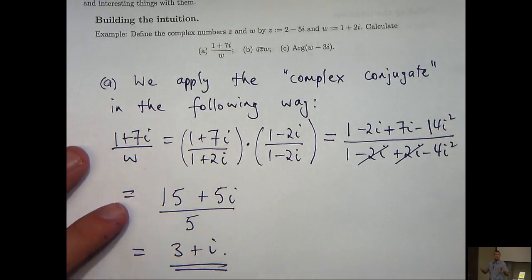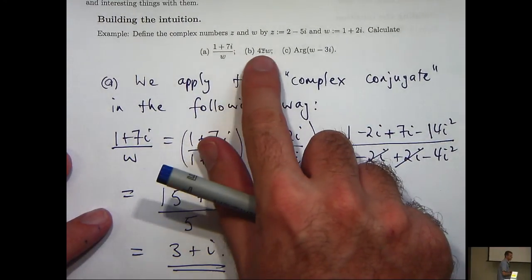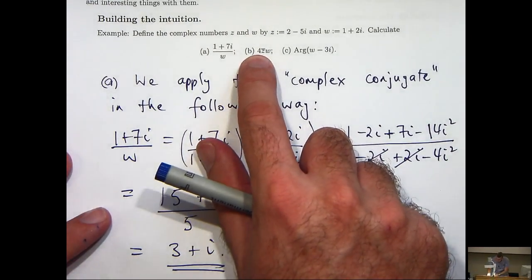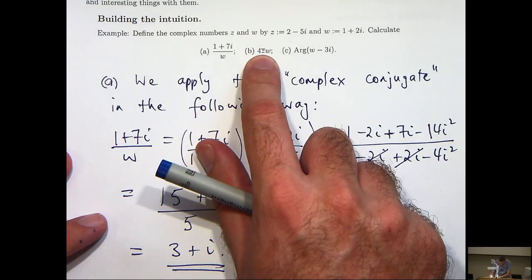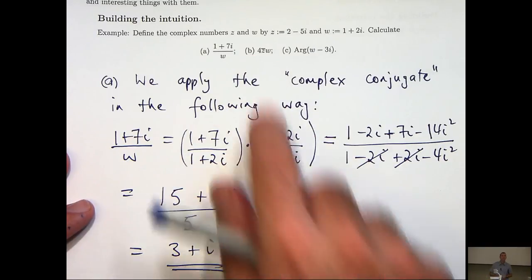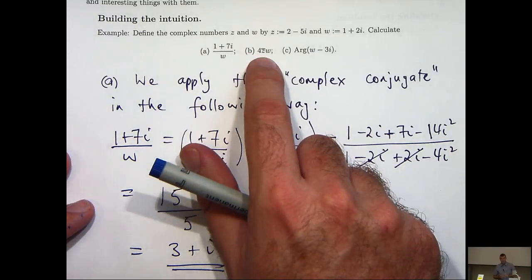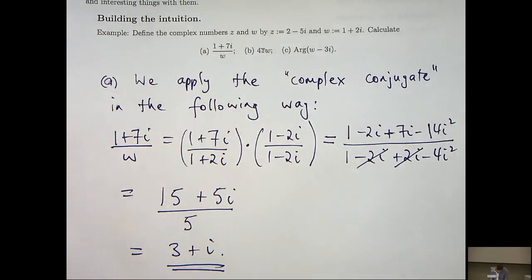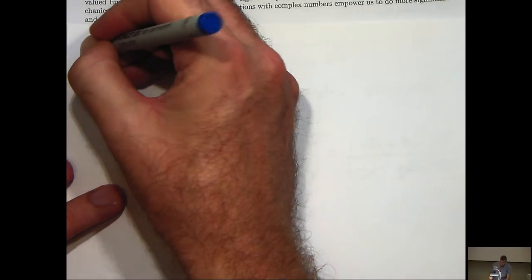Okay let's move on to the next part of our question. Here we have a product and we want to calculate 4 times z bar times w. Now the bar here means conjugate. So 4 times the conjugate of z times w. How do we do that? Well it is basic multiplication. Nothing fancy here.